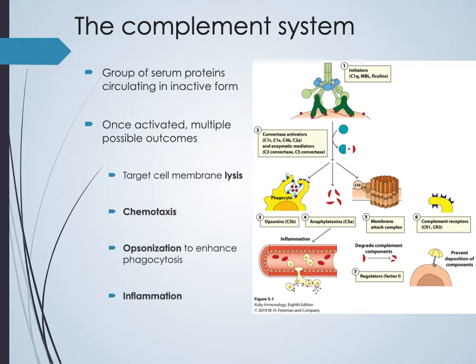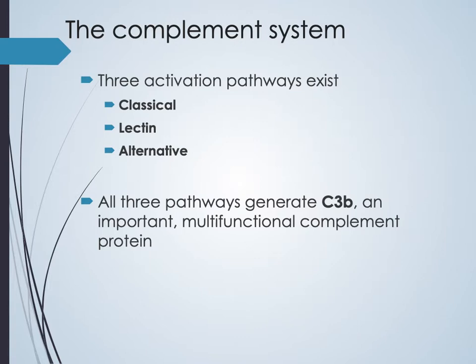As complement proteins become activated and break down, some components can be used for chemotaxis, drawing additional phagocytes to the location. Complement can also lead to opsonization — coating the surface of bacteria so phagocytes can recognize and engulf them. Additionally, breakdown products of complement proteins can activate inflammation.